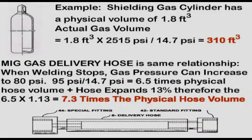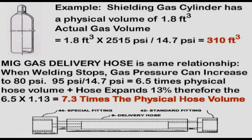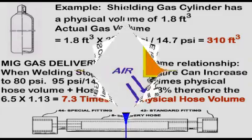As a practical implication in MIG welding, consider a large shielding gas cylinder with a physical volume of 1.8 cubic feet. The pressure in a full cylinder is normally 2,500 psi, so the absolute pressure is 2,515 psi. Dividing by 14.7 provides the volume of gas measured at room temperature and pressure — 310 cubic feet. In a shielding gas delivery hose, when welding stops, the pressure may rise to 80 psi or 95 psi absolute. The gas hose then stores 6.5 times the physical hose volume of gas, and a typical hose expands about 13%, making the stored gas volume 7.3 times the static hose volume.